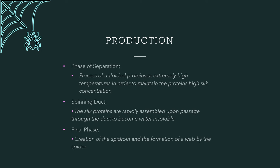Production: The production of spider silk is performed with unfolded proteins at extremely high temperatures. The phase of separation is the process of unfolding the proteins to maintain the protein's high silk concentration. By using an entire coil structure in the gland, the silk protein is rapidly assembled upon passage through the spinning duct. This process causes the silk structure to become water-insoluble. In the spinning duct, the silk is assembled by aligning and packaging the individual silk proteins in a laminar flow. The final process is the spydrone and the creation of a web by the spider.